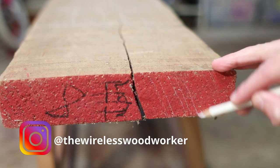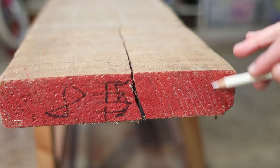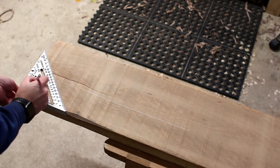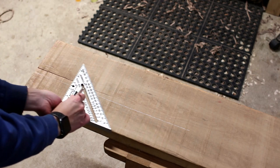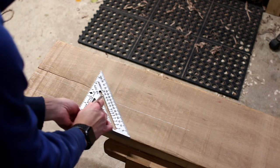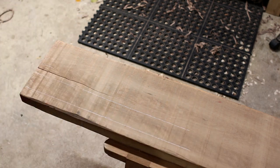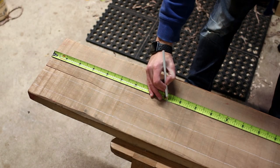First up is marking everything out. Take a look at the end grain and pay attention to the grain direction, mostly for the long post. I'm looking for some rift-sawn grain, so I want it nice and straight on all four sides.